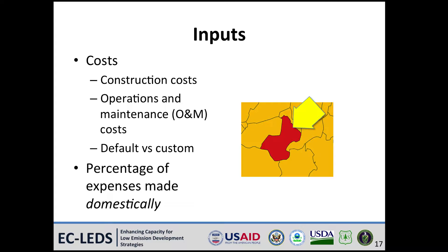The inputs that iJEDI requires include construction costs and operations and maintenance costs. iJEDI also needs to know the percentage of expenses made within the region of interest. iJEDI contains default costs for the five countries mentioned earlier — South Africa, Zambia, Mexico, Colombia, and the Philippines. The model is also designed to accept custom cost data from any region in the world, including updated information for the five default countries.